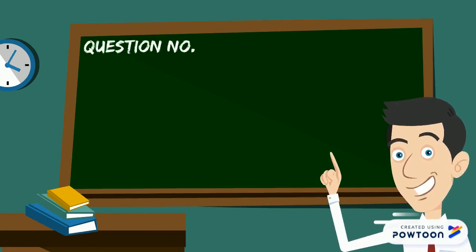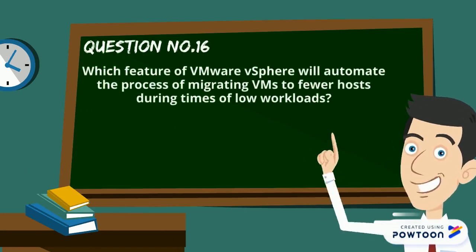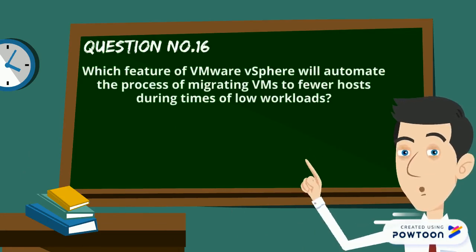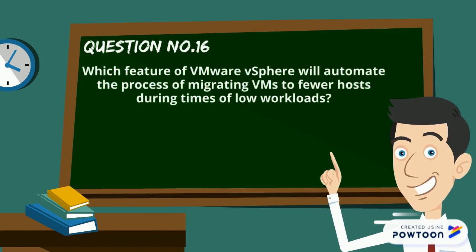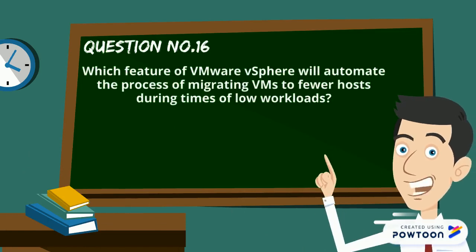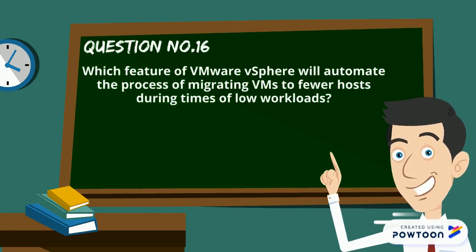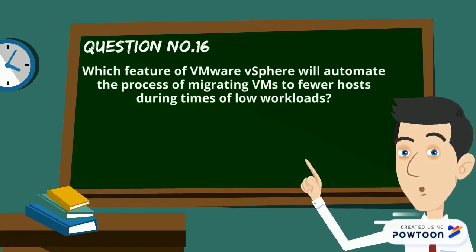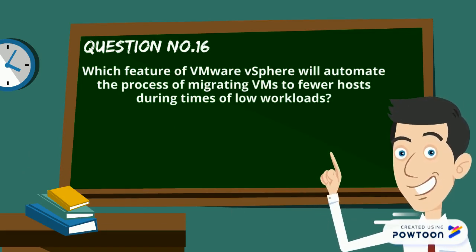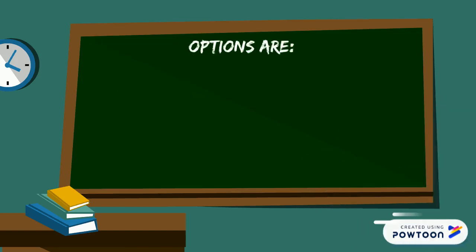Now here is our question number 16: Which feature of VMware vSphere will automate the process of migrating VMs to fewer hosts during times of low workloads? Your options are A - FD, B - EVC, C - DPM, and D - DHA.